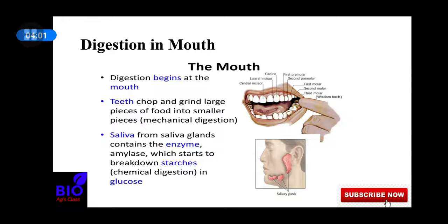When food goes down through the digestive tube, the esophagus also cannot digest food. This is because the esophagus does not have any kind of digestive glands or cells that can secrete enzymes or juices to help digest food. So there is no food digestion occurring in the esophagus.